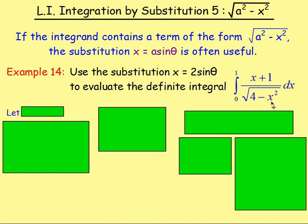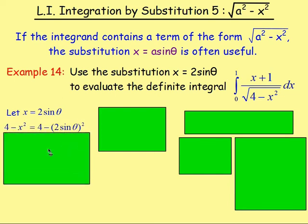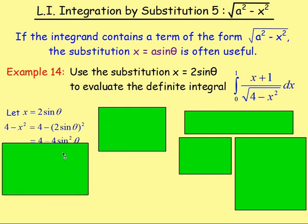Let x equal 2 sine theta. Then, 4 minus x squared becomes 4 minus (2 sine theta) all squared. Squaring 2 sine theta: 2 sine theta times 2 sine theta gives 4 sine squared theta. So we'd have 4 minus 4 sine squared theta.